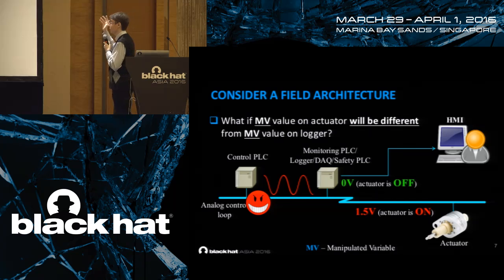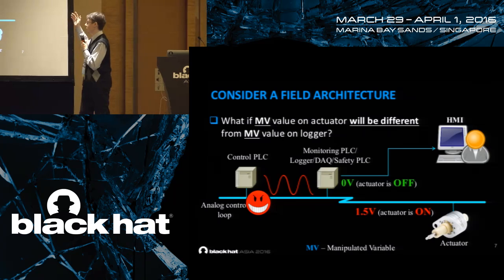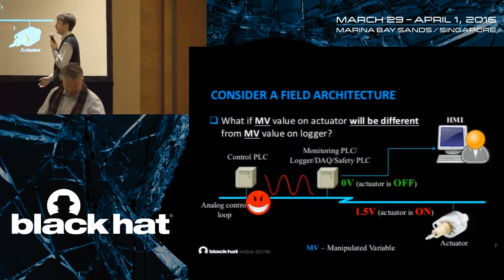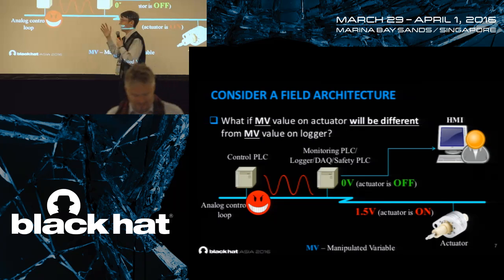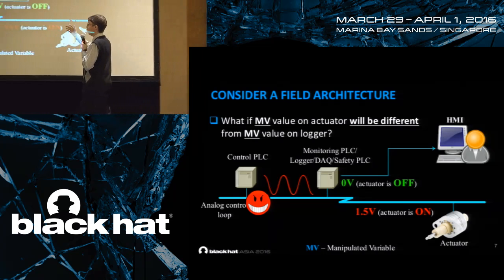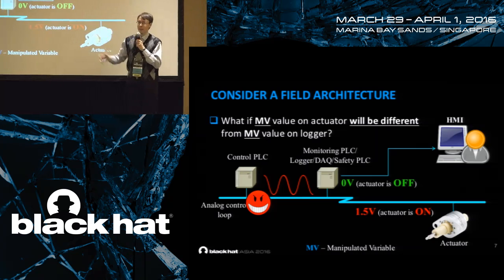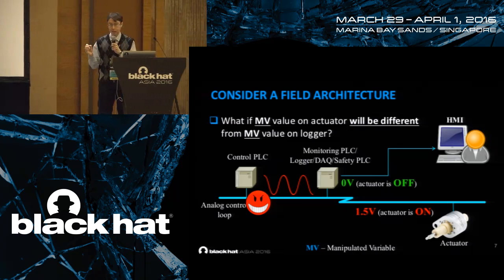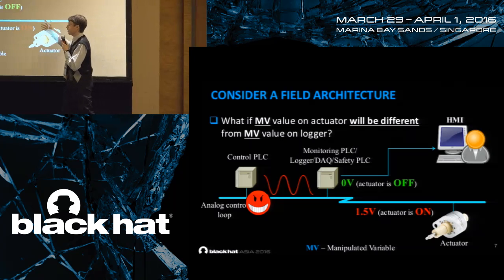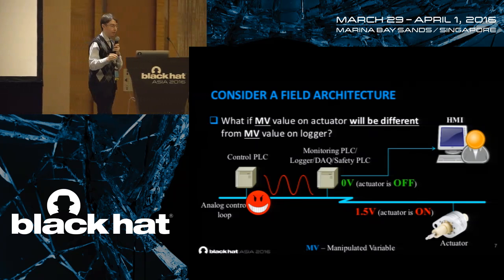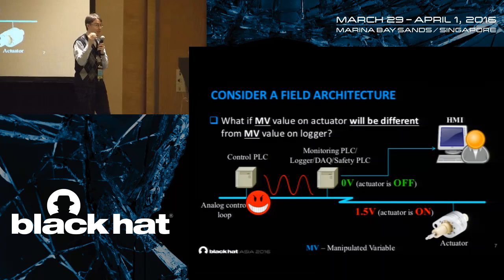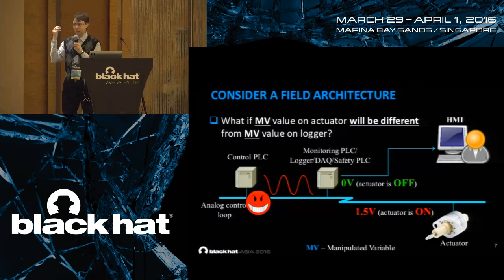Imagine such a field architecture. We have an actuator — for example, a pump or valve — controlled by some analog signal generated by a control PLC. This analog signal represents, for example, speed — some continuous analog variable. And we have a monitoring PLC which monitors the state of this variable, outputs it to the HMI system, and raises an alarm in case of a bad event. What if our manipulated variable could be understood differently at the actuator and the monitoring PLC? Is it possible to have, for example, a value of 1.5 volts here and 0 volts there on the same analog line?